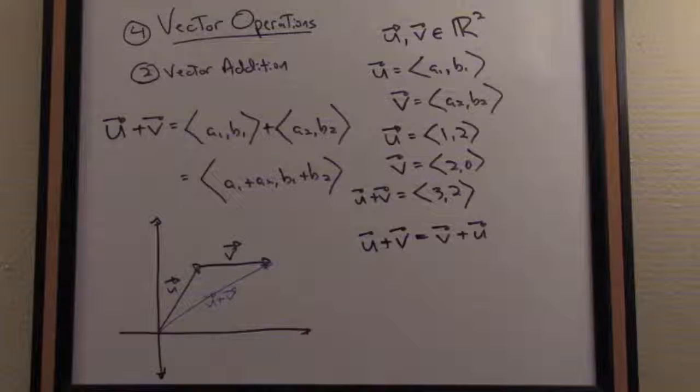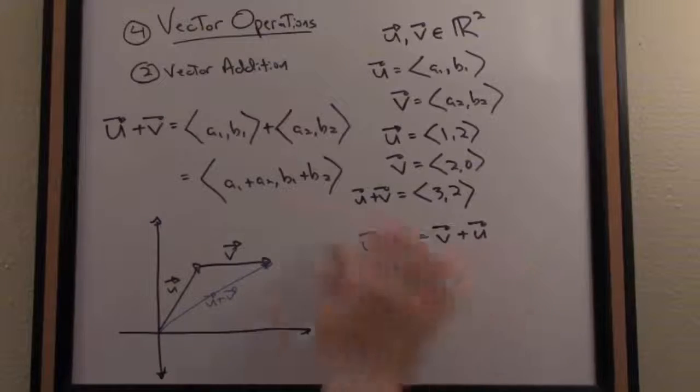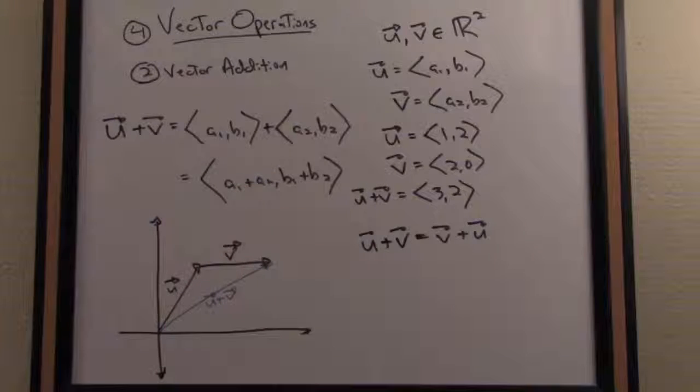In other words, the order in which I add the vectors does not matter. And why is that true? Well, in a basic sense, this property is inherited from the fact that when I add real numbers together, the order doesn't matter. So that's a nice property that we should also see reflected geometrically.